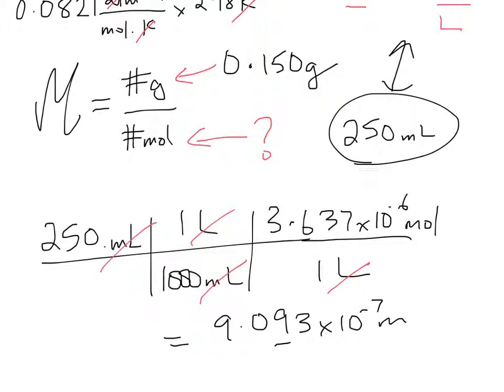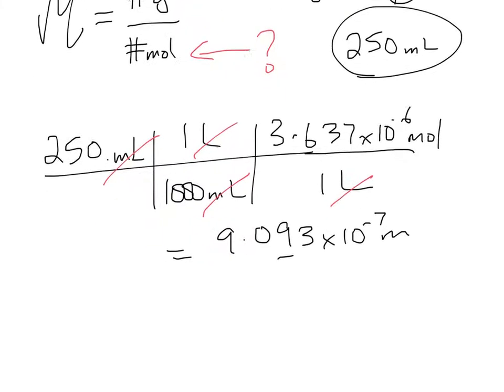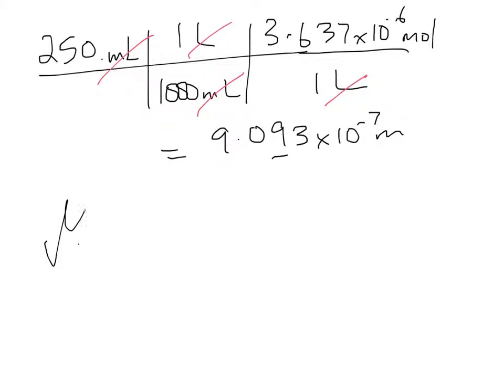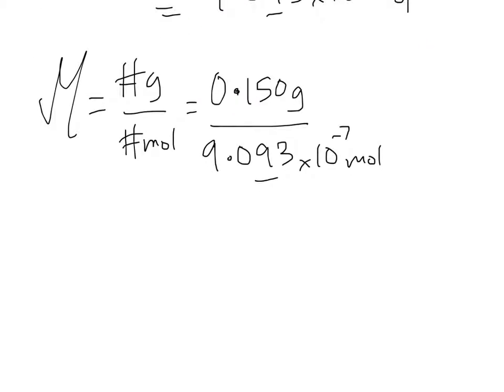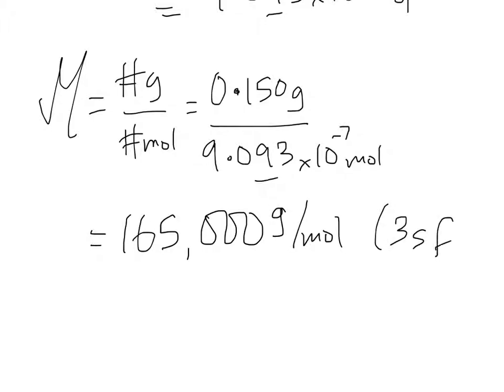And so that means that up here, the number of moles now we figured out. So we can go ahead and plug this into our equation. So, molar mass, number of grams per number of moles, number of grams, again we were told, so that's our 0.150 number of moles, well we just calculated that, and you can see this is a pretty small number here on the bottom. And that means that when we divide, we're going to get an extremely large molar mass, much larger than probably anything we've seen before. In fact, it is about 165,000 grams per mole to three significant figures.